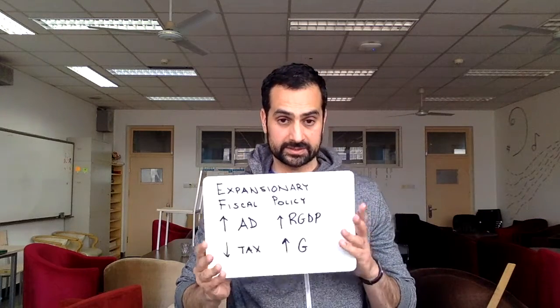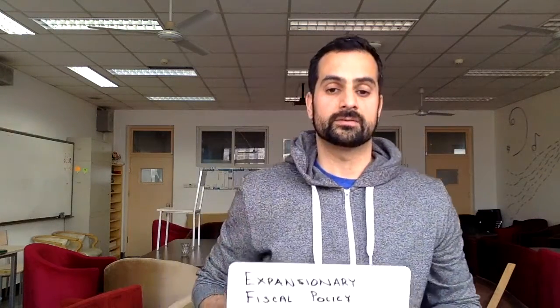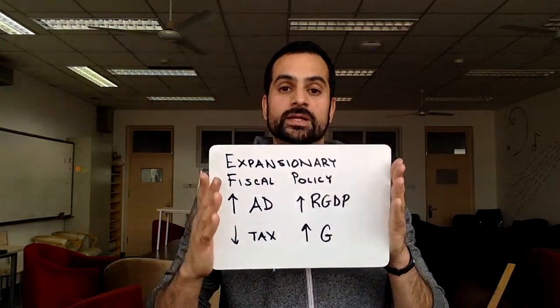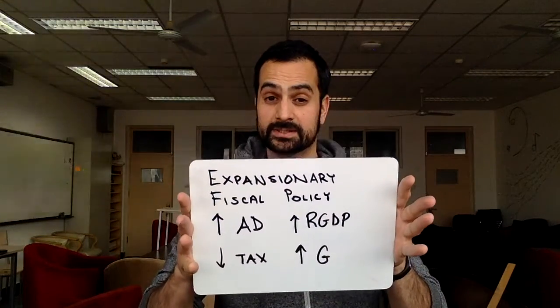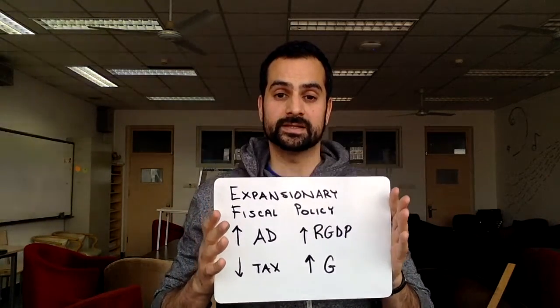I'd like to take a minute now to explain in more detail how fiscal policy works. The first approach is expansionary fiscal policy. Expansionary fiscal policy is trying to boost aggregate demand or increase real GDP. Through fiscal policy, what the government can do is either decrease taxation or increase government spending. That's expansionary policy, or what is also called reflating the economy.